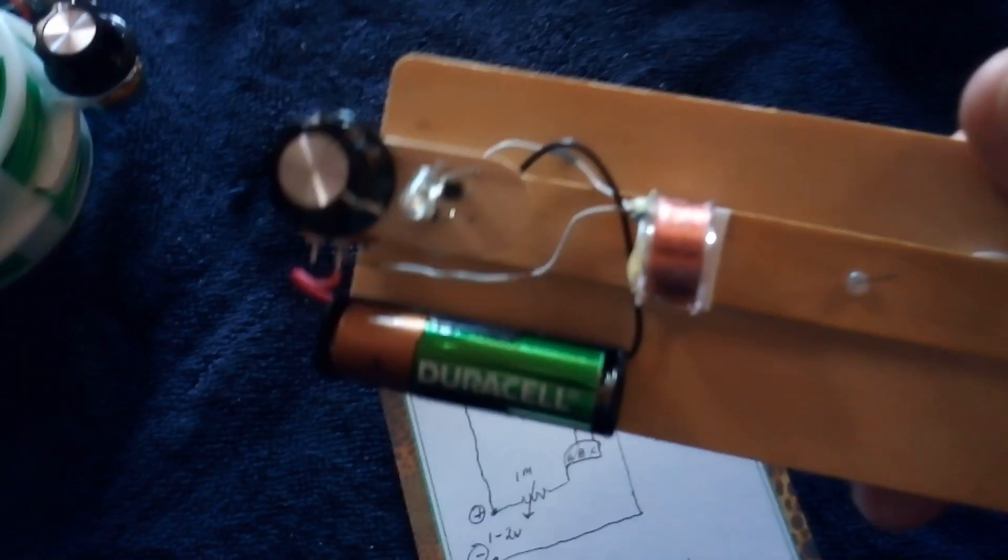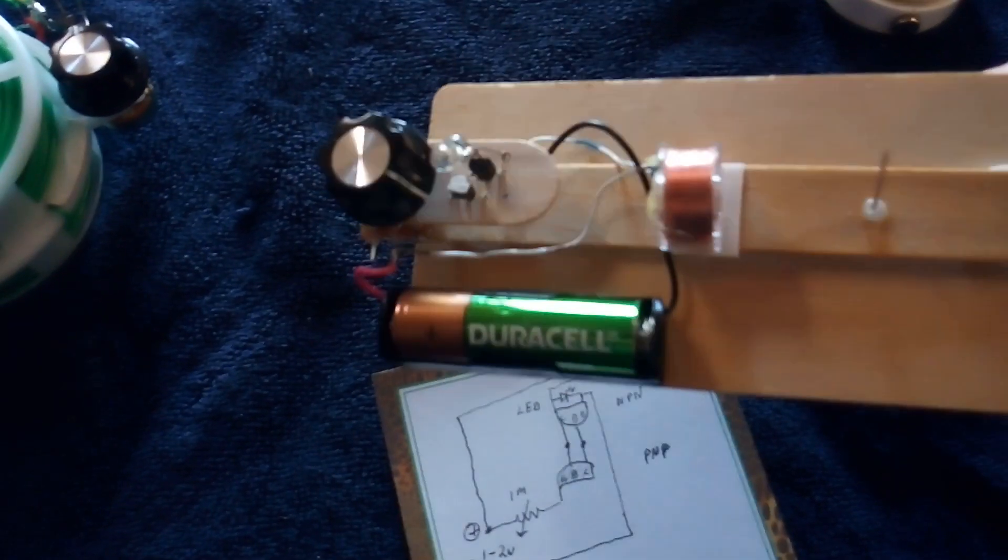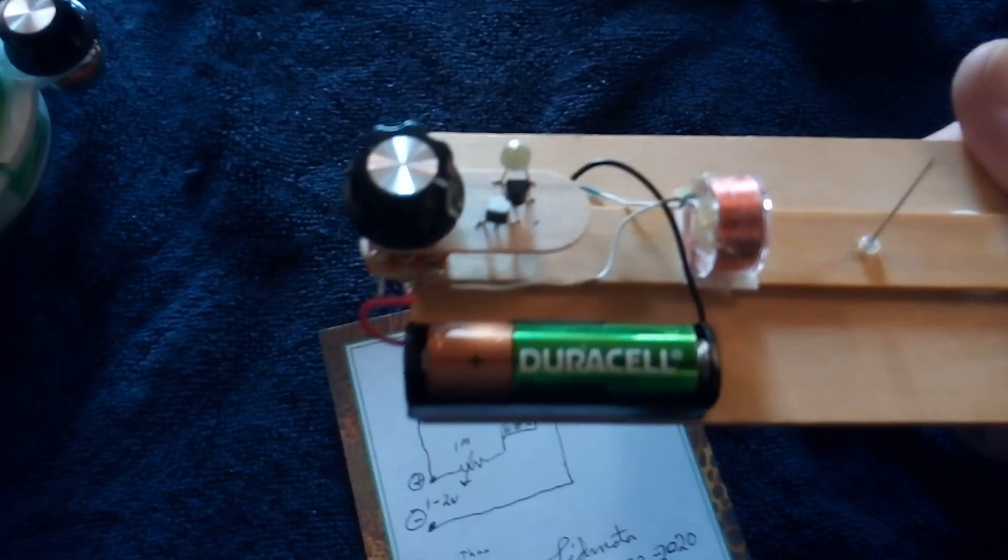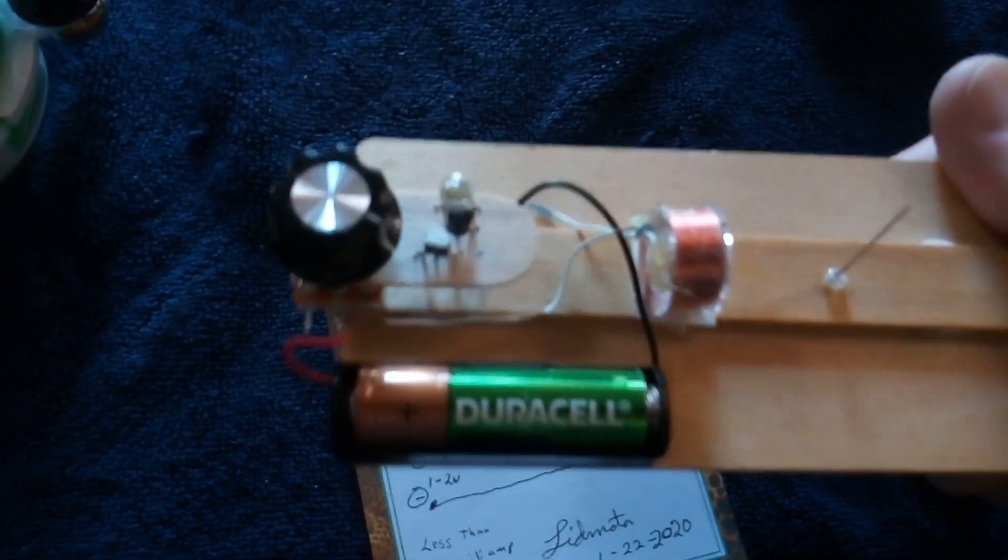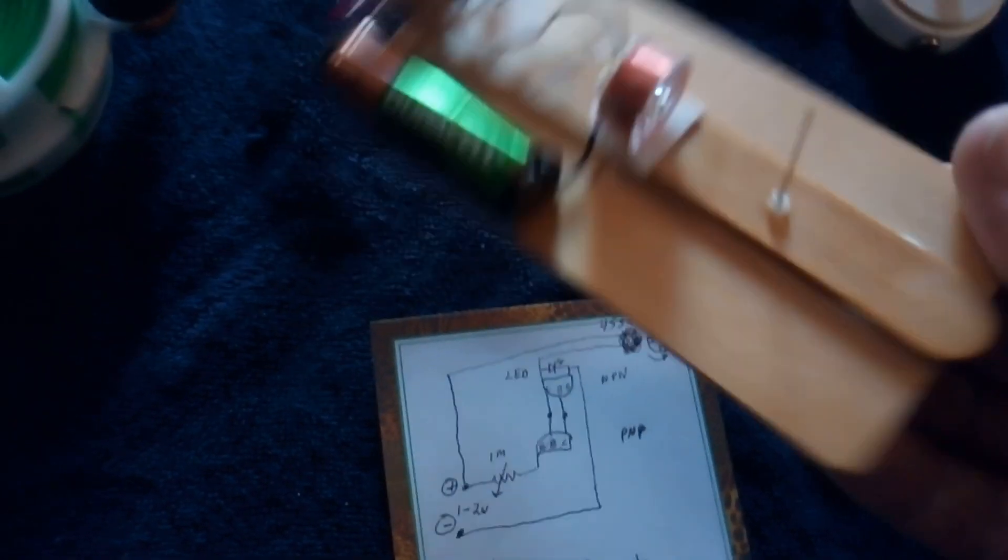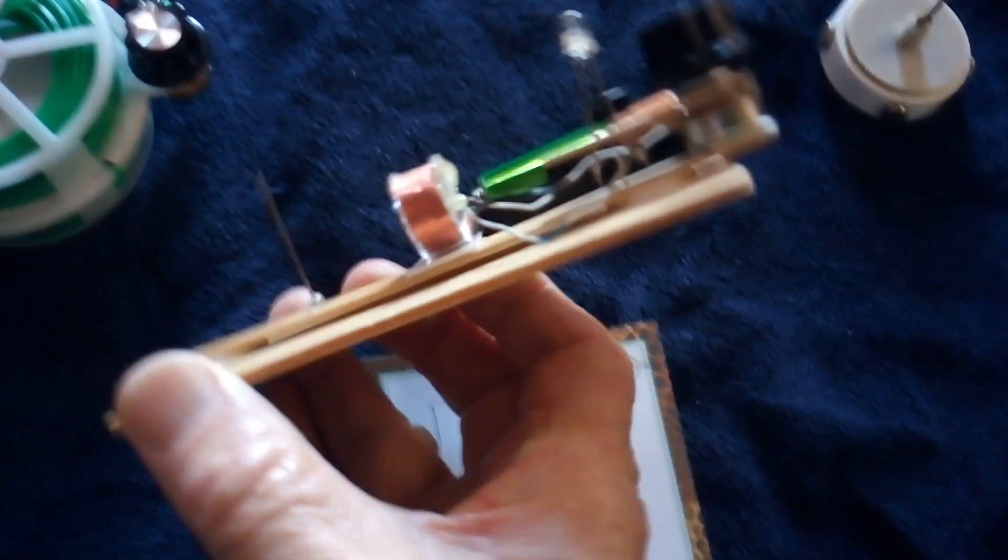Now some of the guys are going to say, oh, you're going to have leakage through the wood. Yeah, maybe. I don't really care, we'll see what happens. But depending on the moisture content of the wood and all that good stuff, that was an easy way to do a circuit board if you don't want to solder up a regular circuit board.